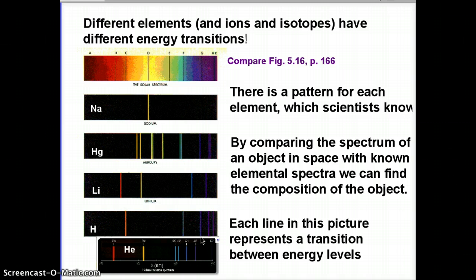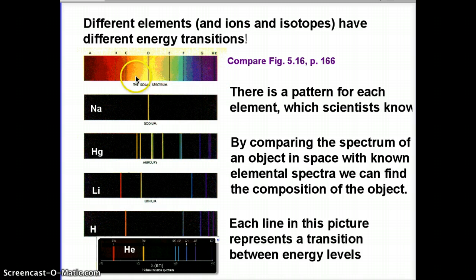Just to remind you of some things, this is a very zoomed-out version of the spectrum of the Sun. You see a continuous background with some absorption lines that they have marked with various letters. The key thing in interpreting a spectrum like this is that different elements, and even the ions of the different elements, have different transitions between energy levels.